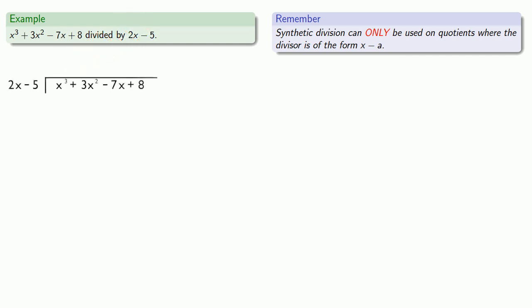And while everybody loves doing long division, we might still be able to use synthetic division on this if we remember an important property from the real numbers. a divided by b is the same as a divided by n divided by b divided by n.